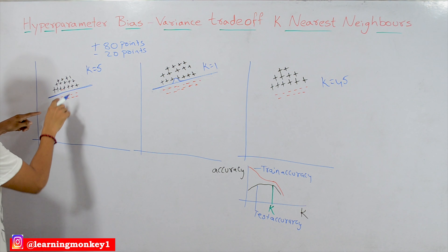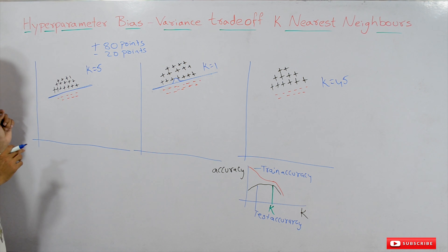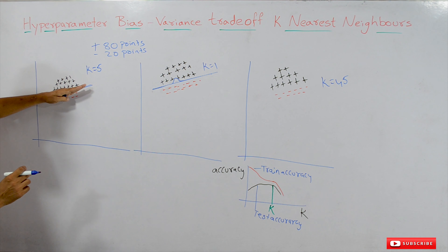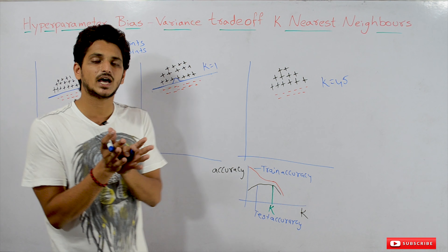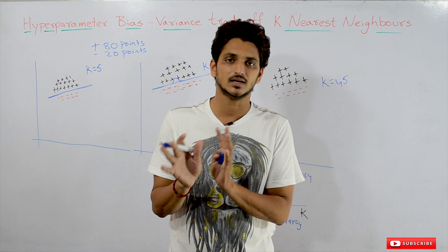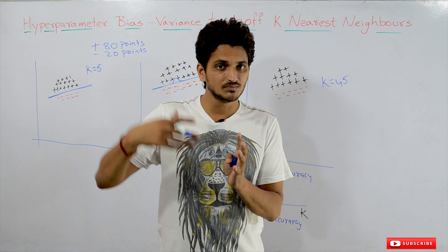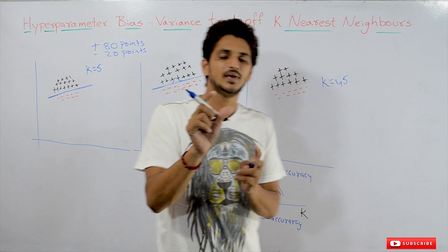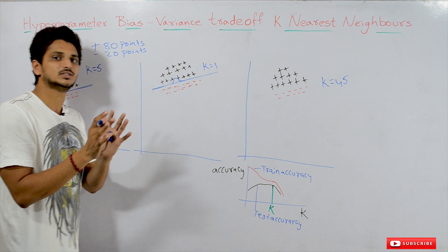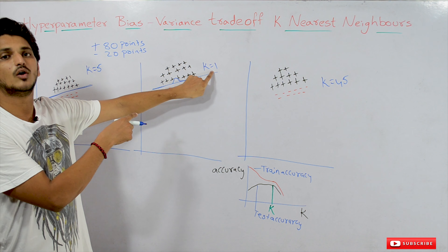Let's compare with K equal to 5. If we remove that same negative data point, the decision surface for K=5 does not change — it remains the same. For small changes in data, if our model is not changing much, that is a stable model. But if our model is changing much, we call it an overfitted model. High variance means our model is varying a lot. For K equal to 1, it is acting as an overfitted model.